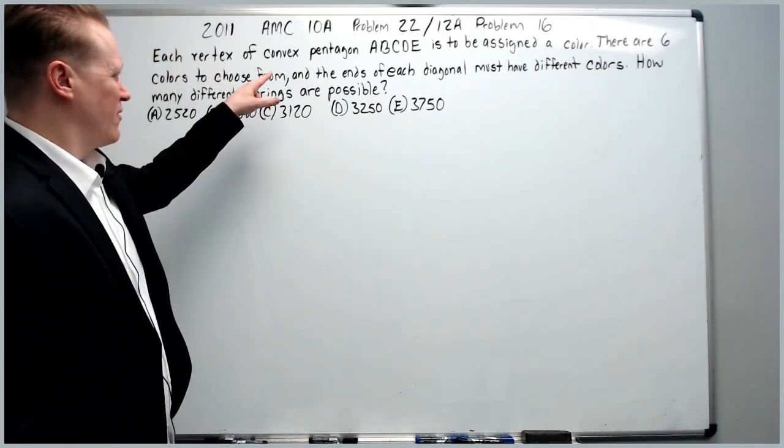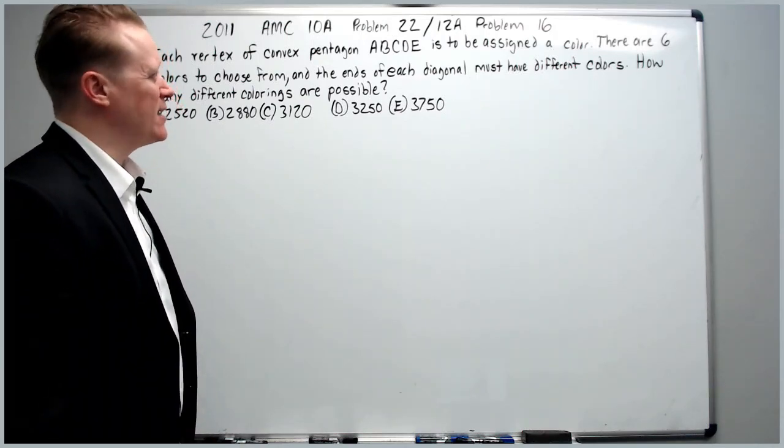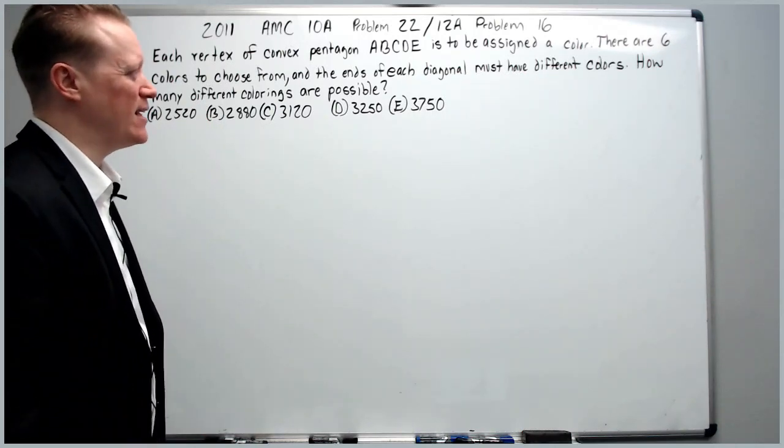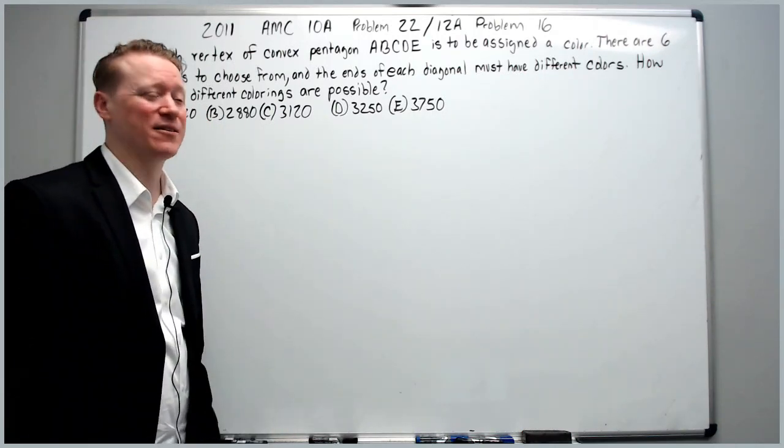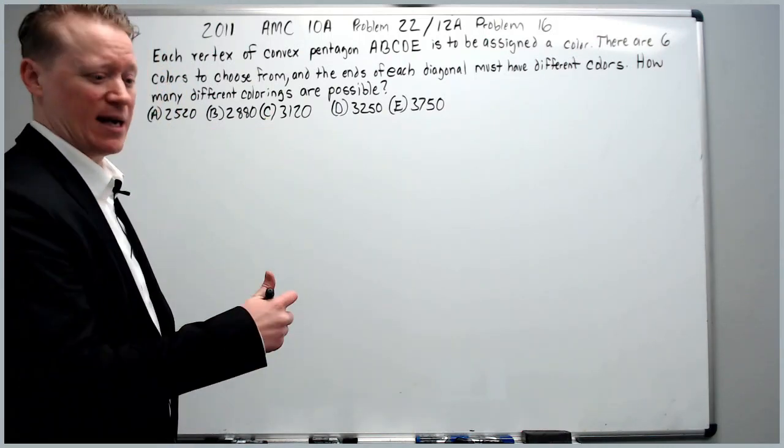Each vertex of a convex pentagon A, B, C, D, E is to be assigned a color. There are six colors to choose from and the ends of each diagonal must have different colors. How many different colorings are possible?